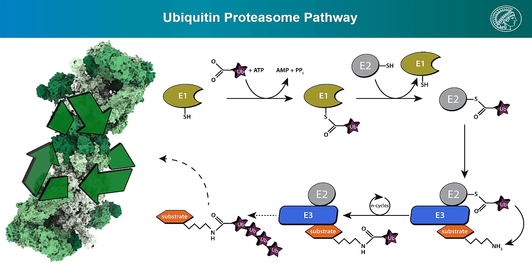The E1 enzyme activates a ubiquitin molecule that is then transferred onto an E2 enzyme. This E2 enzyme then comes together with an E3 ligase to form an E3 ligase complex. This complex is able to recognize and recruit substrates, which are then polyubiquitinated and shuttled to the proteasome, where they get degraded into small peptides.